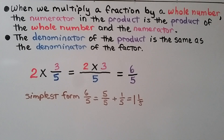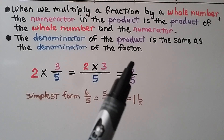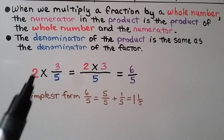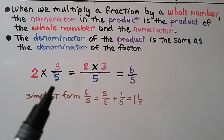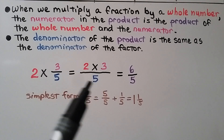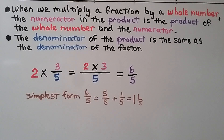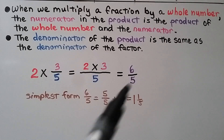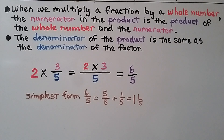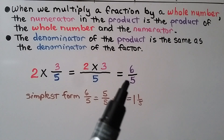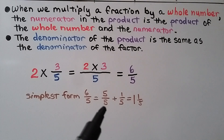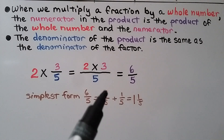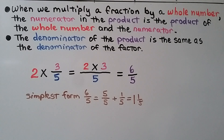So when we multiply a fraction by a whole number, the numerator in the product is the product of the whole number and the numerator, and the denominator of the product is the same as the denominator of the factor. We do 2 times 3, which is 6, and we write it over the 5 denominator. In simplest form, 6 fifths — a fraction greater than 1 — equals 5 fifths plus 1 fifth, that's one whole with 1 fifth remaining, so we have 1 and 1 fifth.